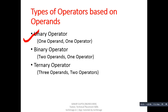The second one is binary operator. In this case, there should be two operands and one operator. The third is ternary operator, which contains three operands and two operators.